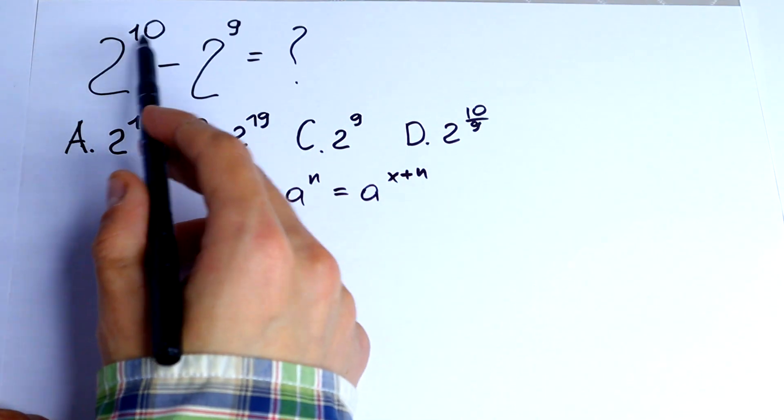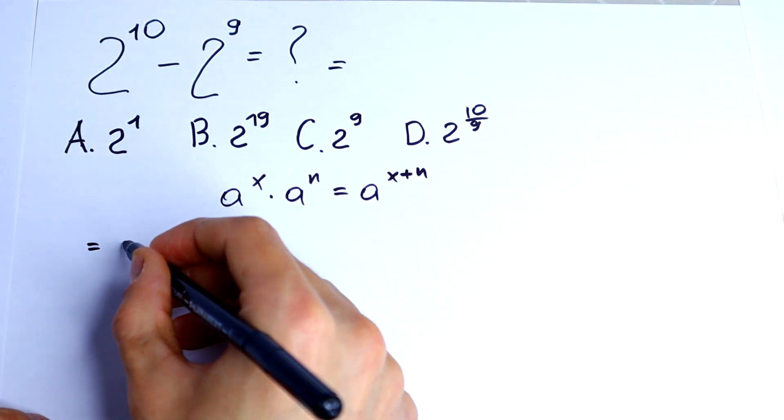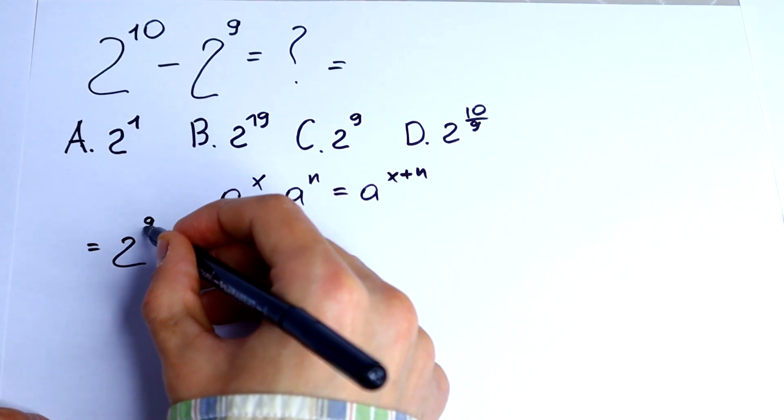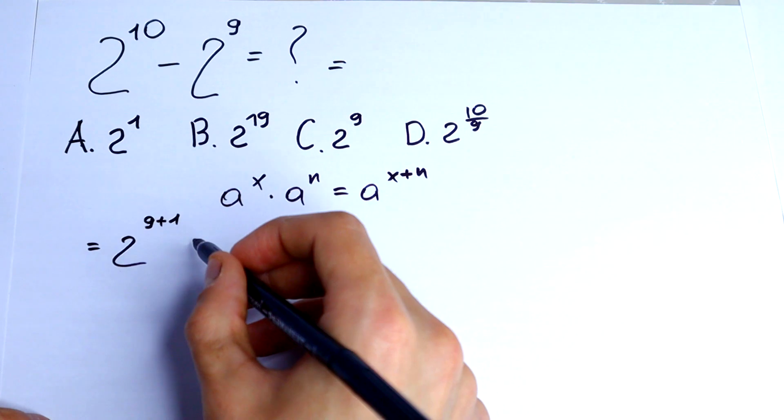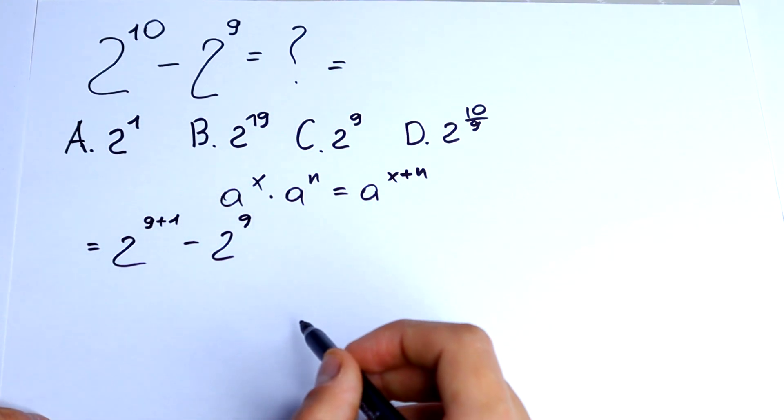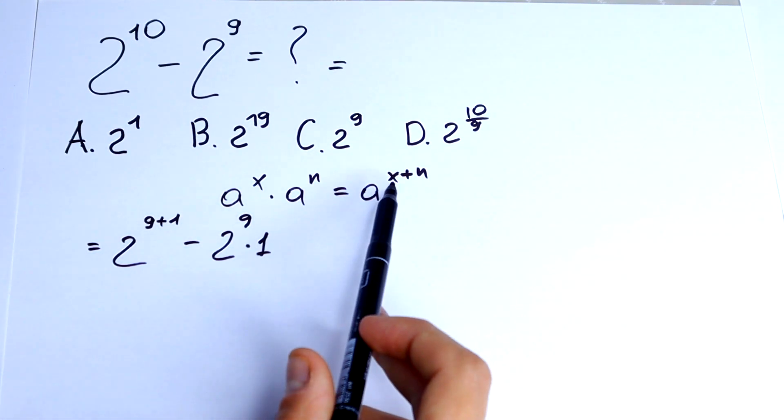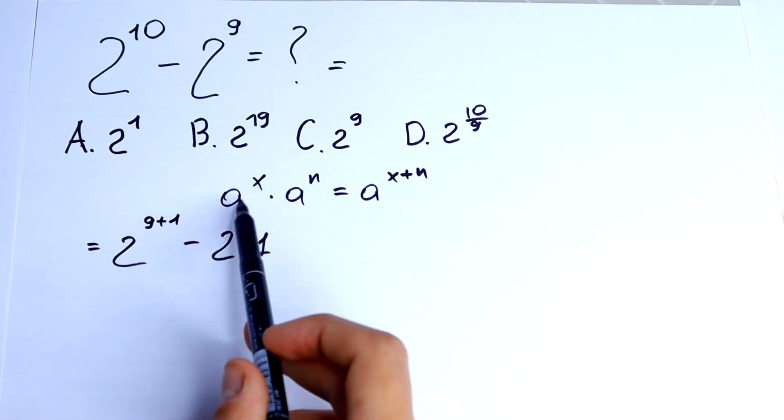Write this 10 as 9 plus 1. 2 to the power 9 plus 1 minus 2 to the power 9 times 1. We can break it like that.